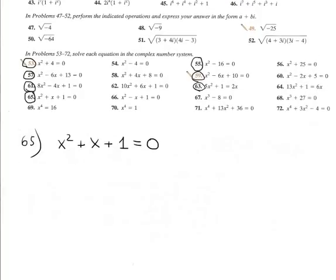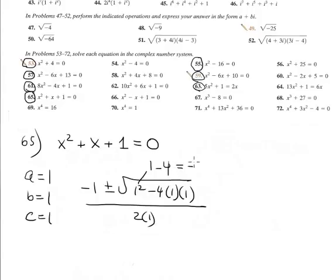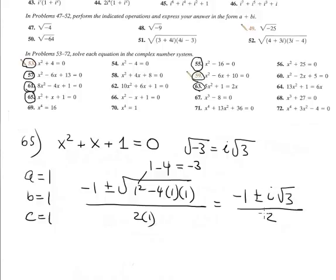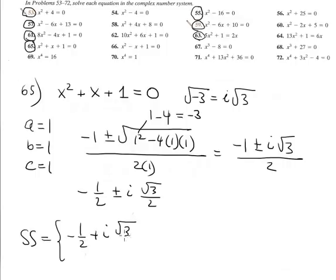Another quadratic equation — solve by quadratic formula. In this case a = 1, b = 1, c = 1. So we have: (-1 ± √(1² - 4·1·1)) / (2·1). That is 1 minus 4 equals negative 3, so the square root of negative 3 is i√3. We have (-1 ± i√3) / 2. Separating real and imaginary parts: -1/2 ± (√3/2)i. Solution set: {-1/2 + i√3/2, -1/2 - i√3/2}.